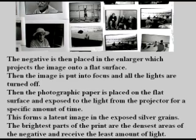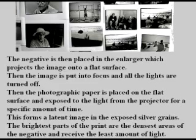The negative is placed in the enlarger, which projects the image onto a flat surface. Then the image is put into focus, and all the lights are turned off. The photographic paper is placed on the flat surface and exposed to the light from the projector for a specific amount of time. This forms a latent image in the exposed silver grains. The brightest parts of the print are the densest areas of the negative and receive the least amount of light.